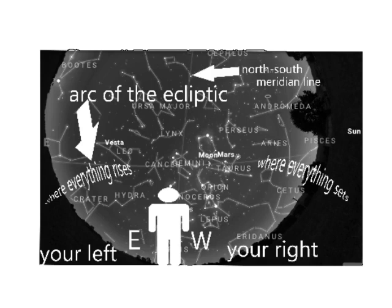This arc of the ecliptic is an imaginary line on this image, but it's where everything rises and sets — everything as in the sun, the moon, and all the known planets and all the known constellations of the zodiac. This is why this is such an important place for us to focus on, because all of the major luminaries of the nighttime sky rise in the east and set in the west along this very narrow band known as the Arc of the Ecliptic. Where the Arc of the Ecliptic crosses the other imaginary line in this image, it's known as the north-south meridian line.